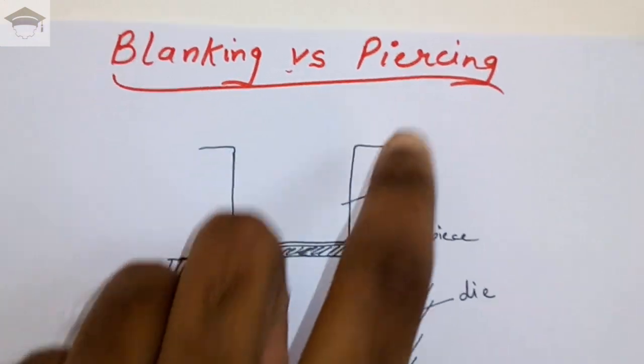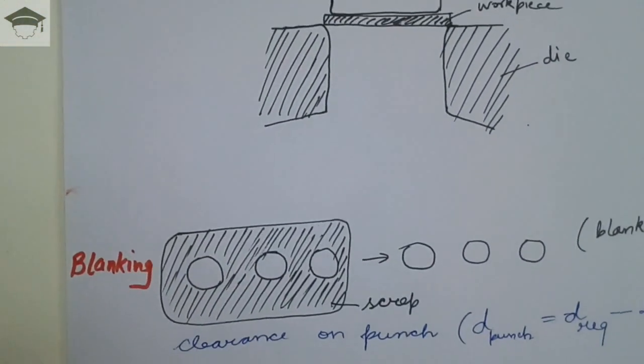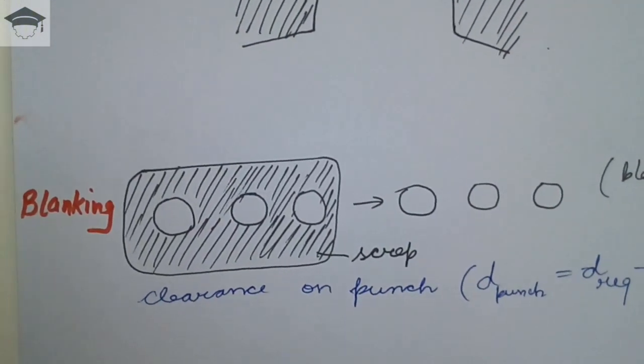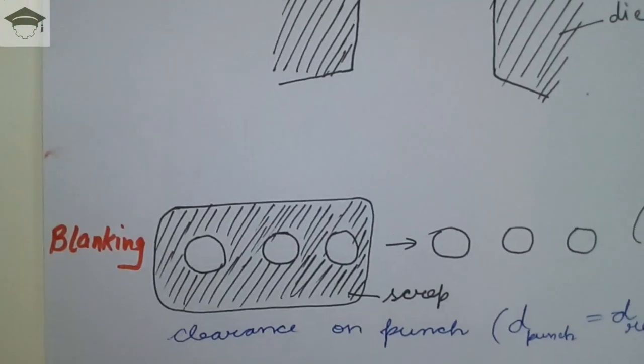There are primarily two operations that are performed: one is known as blanking and one is known as piercing or punching. Now the difference between blanking and piercing—first you have to understand what is blanking and what is punching.